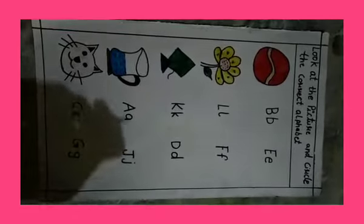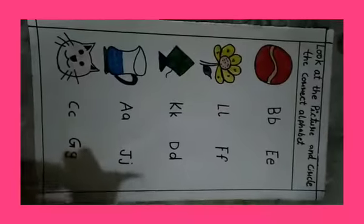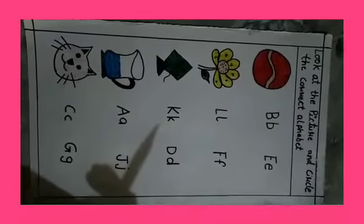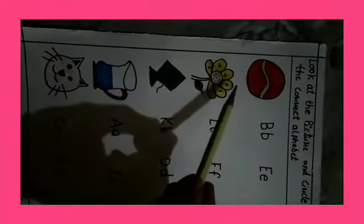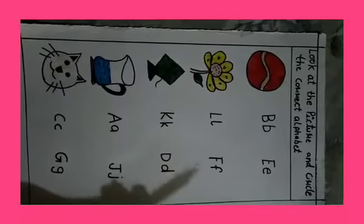Okay, today we will do a worksheet also. We learned A to L alphabets already. Now we will look at the picture and circle the correct alphabet A to L. So what to do? You have to see the pictures and then you have to see the alphabets. You have to circle the correct alphabet. Okay, so let's begin.